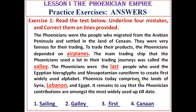The fourth mistake: Phoenicia today comprises the lands of Syria, Lebanon, and Egypt. Egypt is incorrect here. The correct answer is Canaan. These are the four mistakes found in the paragraph, written in red, with the corrected answers written on the lines below.